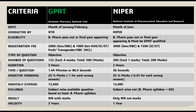Regarding results: in GPAT, all India ranking with marks will be announced. In NIPER, only all India ranking will be announced — no marks. The validity of the GPAT scorecard is 3 years, while NIPER result validity is only 1 year.